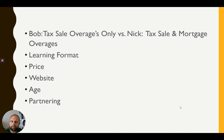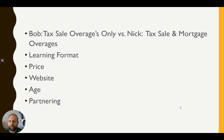My business really took off when I figured out I could apply the concepts from Bob's course to mortgage overages. Where I live, there's only about one tax sale per county per year, and people in my state are pretty good about paying their property taxes, so there's not a lot of properties being auctioned at tax sales. If you live in other states, sometimes you have tax sales every single month — it just depends where you live.